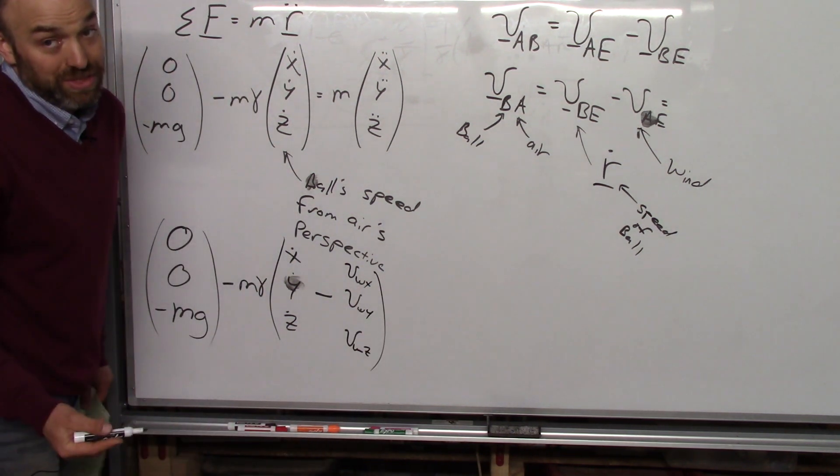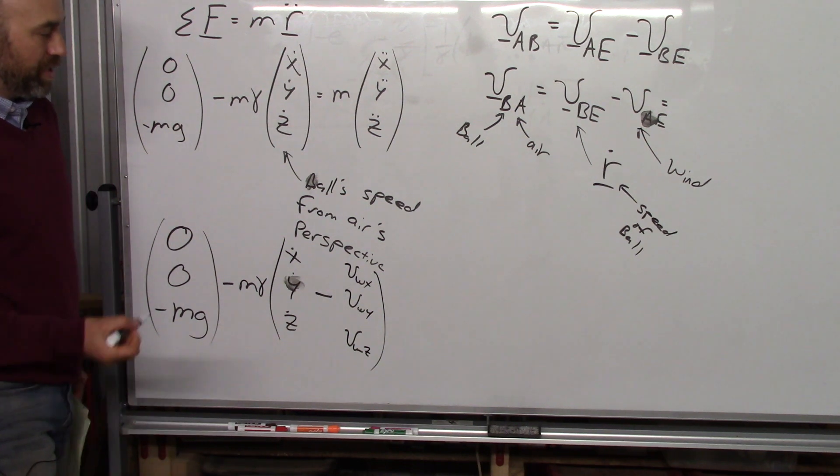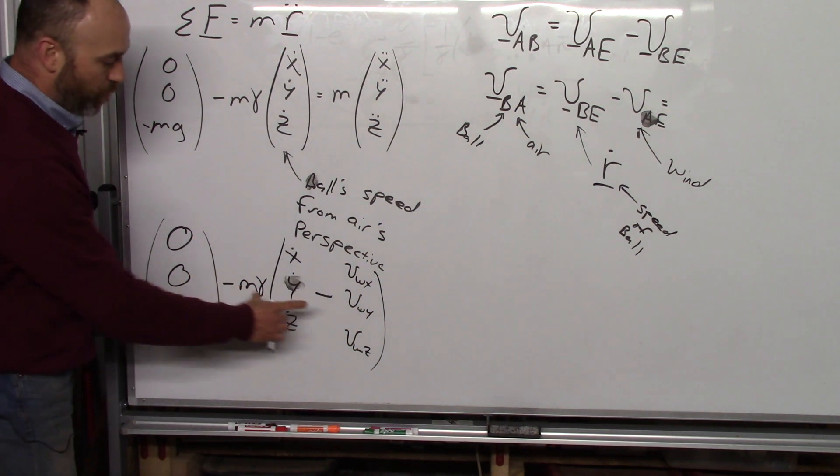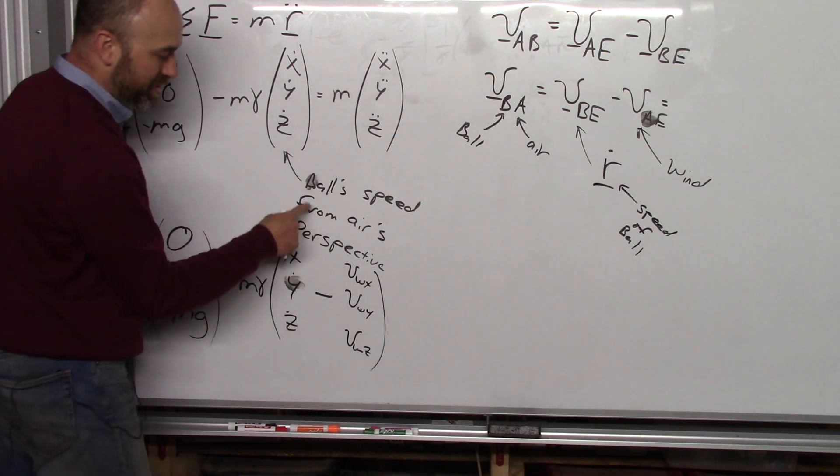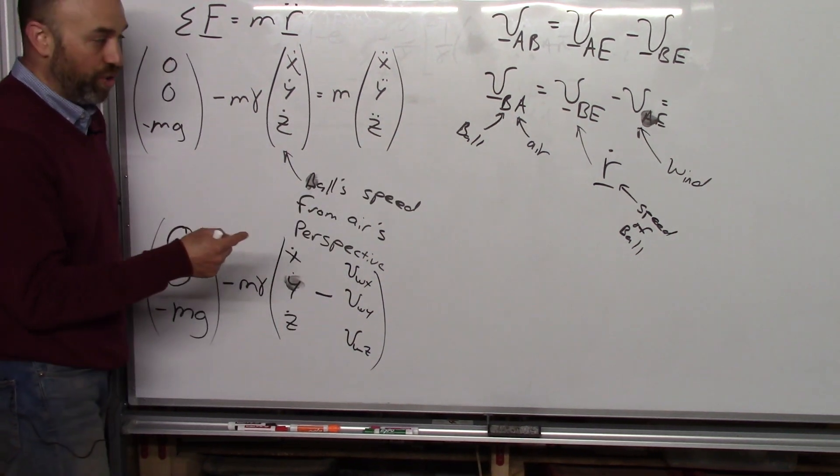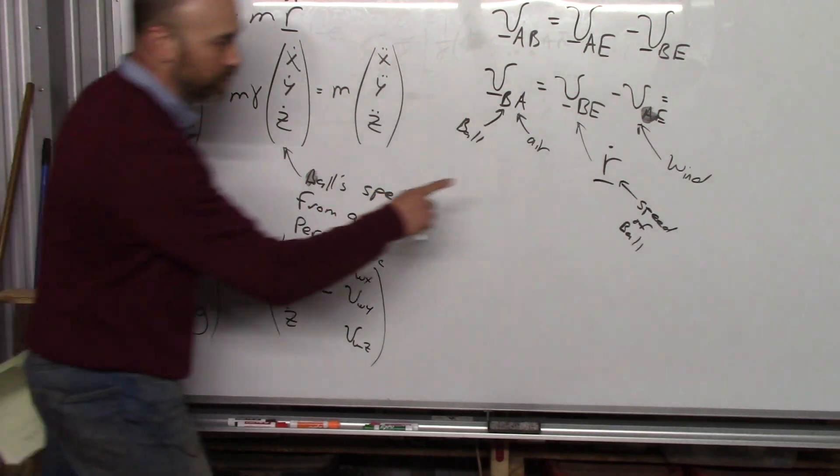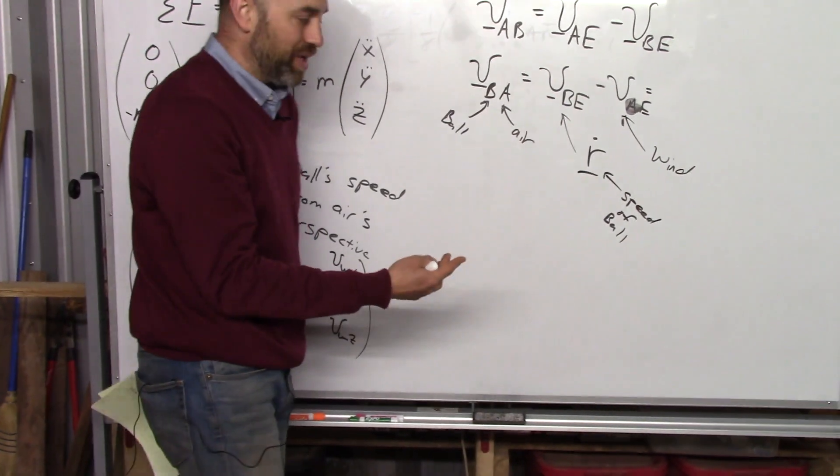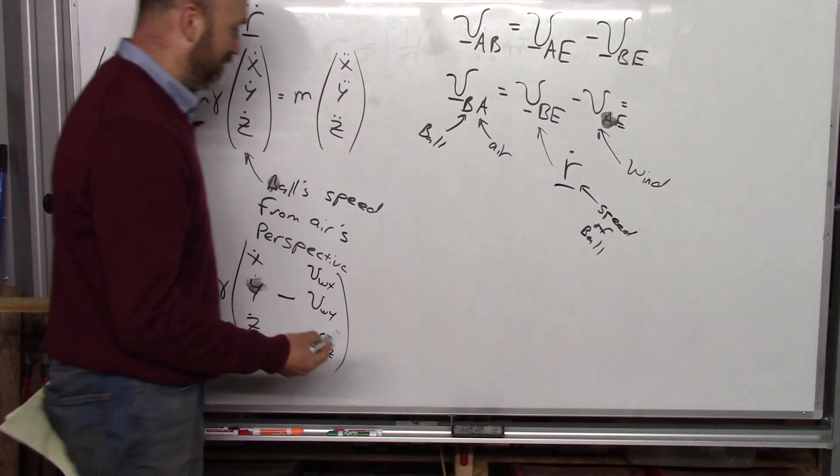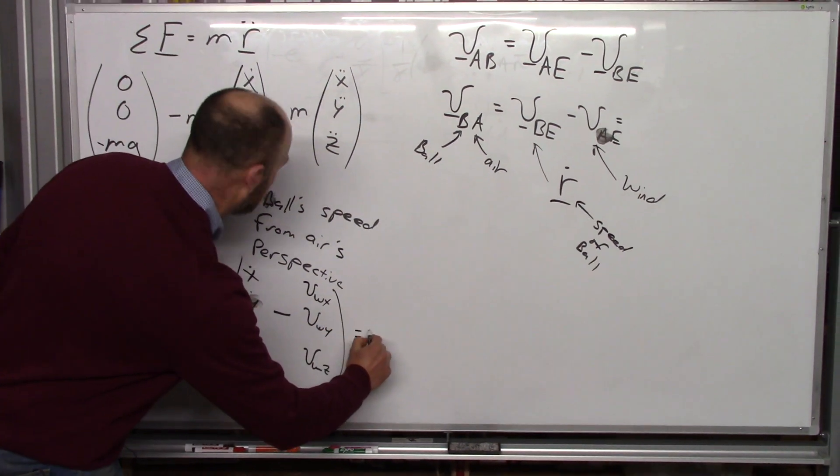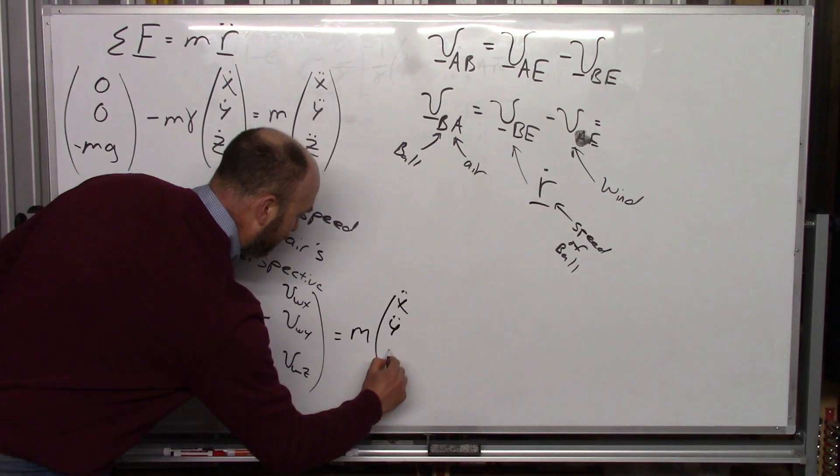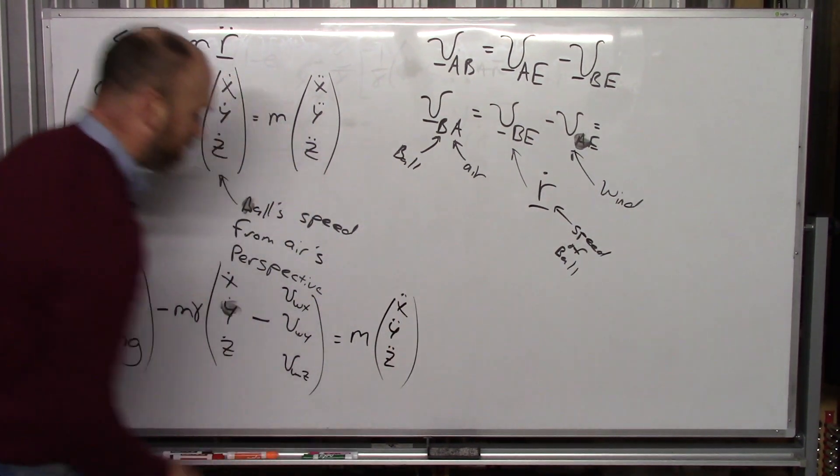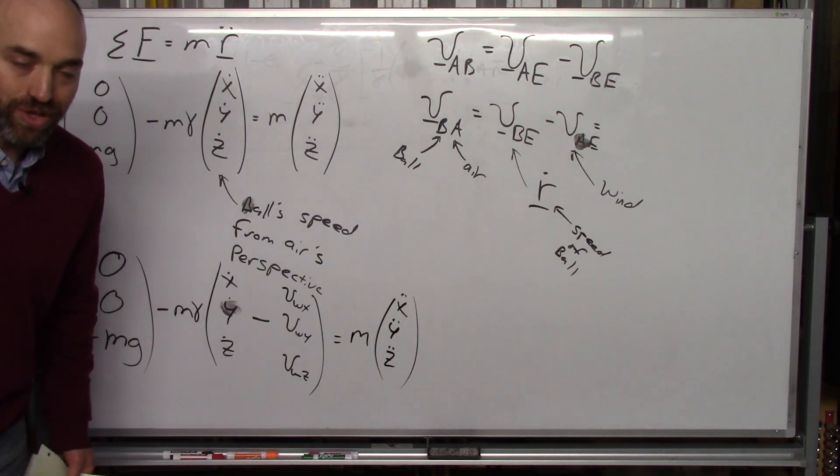Usually there's not much of an updraft, but sometimes there is. So basically, what we need here in this equation is the relative speed of the ball from the air's perspective. And the way you do that is using the relative velocity equation. So you have to subtract off the wind. And so then this is going to still be equal to m, x double dot, y double dot, z double dot.